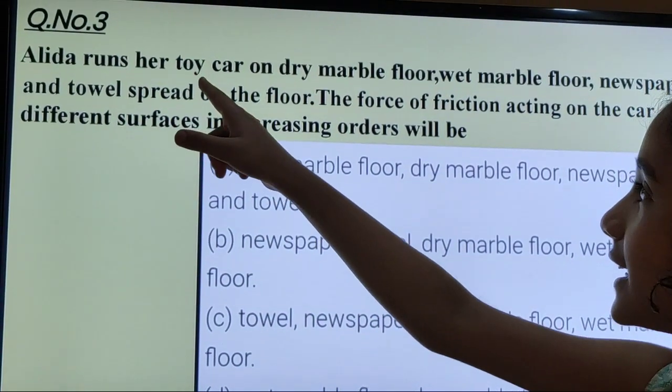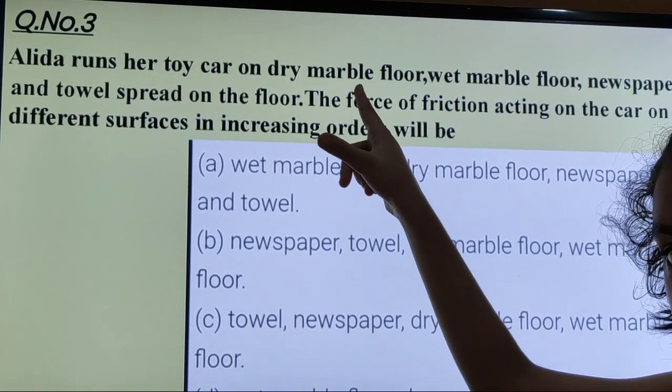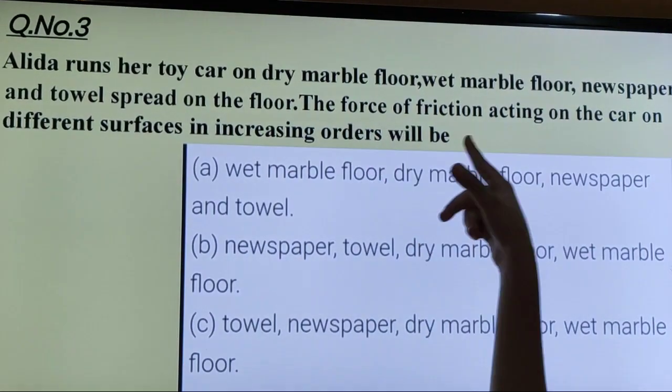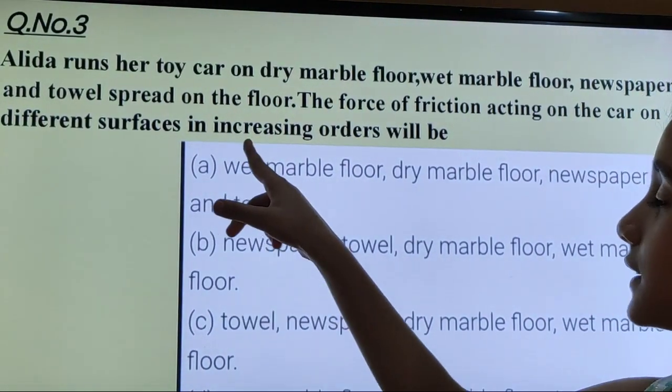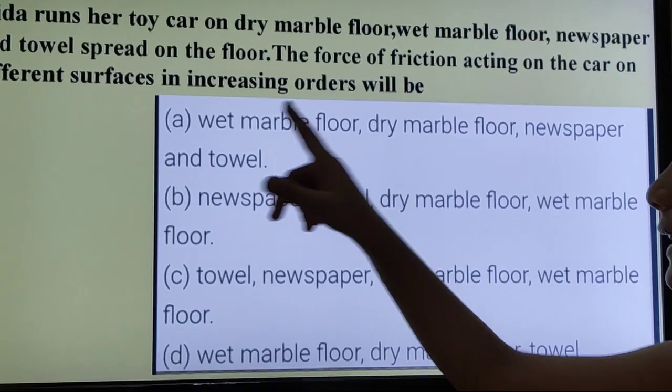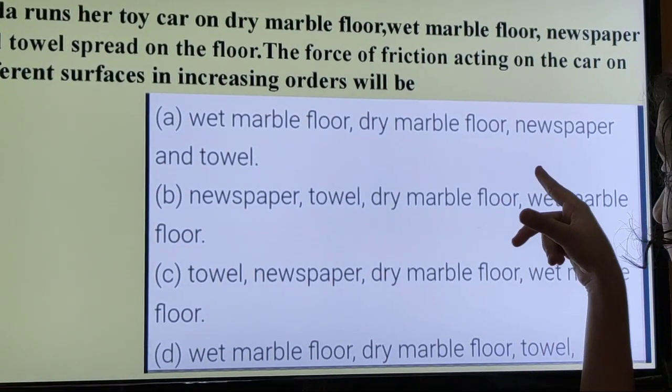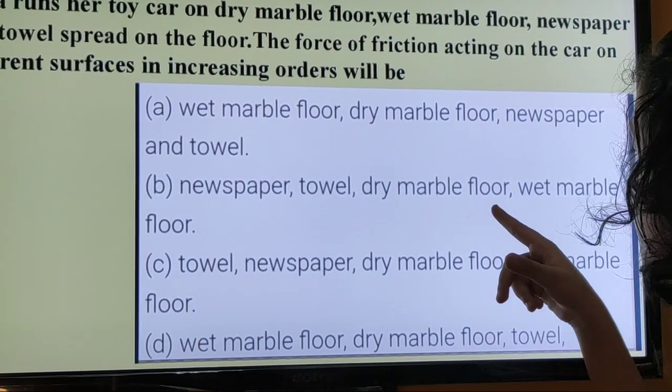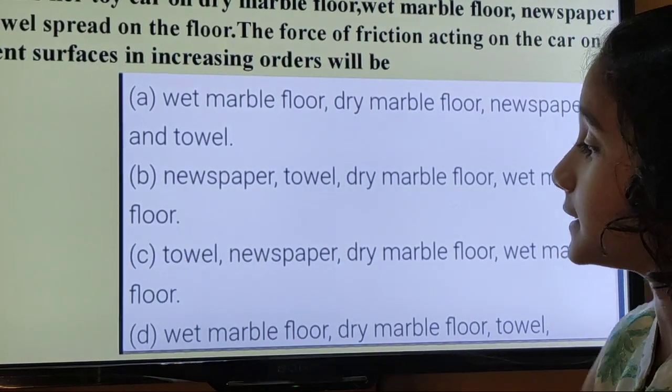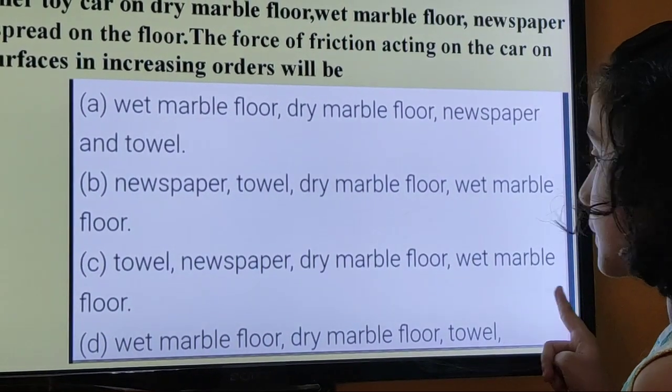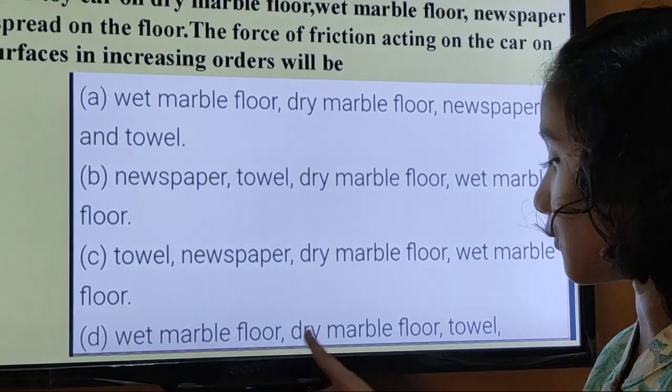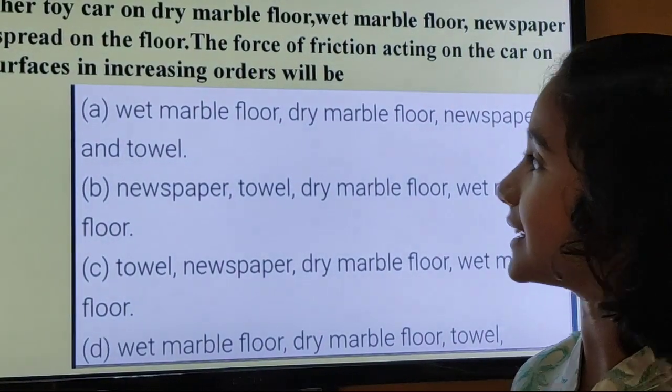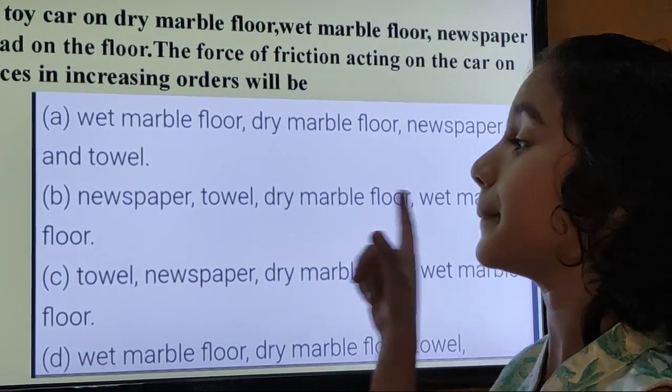Question number 3. Alita runs her toy car on dry marble floor, wet marble floor, newspaper and towel spread on the floor. The force of friction acting on the car on different surfaces in increasing order will be: Number 3, towel, newspaper, dry marble floor, wet marble floor. Number 4, wet marble floor, dry marble floor, towel. Yes, you are right. The answer is wet marble floor, dry marble floor, newspaper and towel.